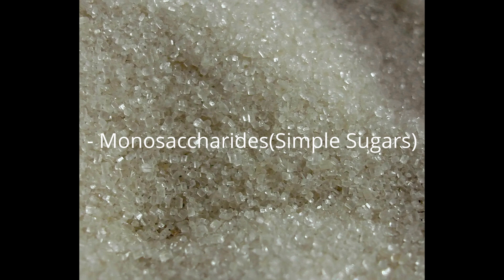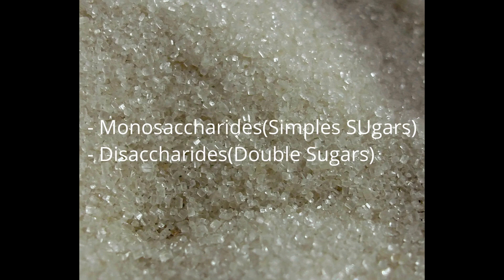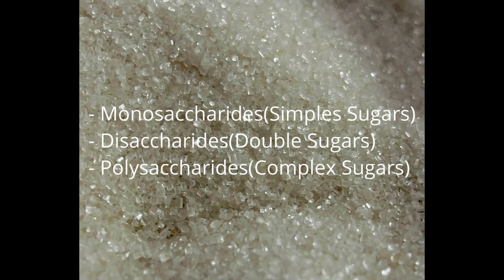Now let's go to the types. You have monosaccharides — simple sugars. You have disaccharides — basically double sugars. And you have polysaccharides — complex sugars or carbohydrates.